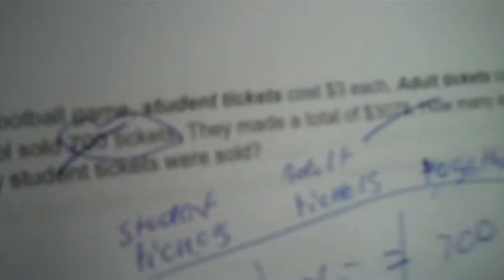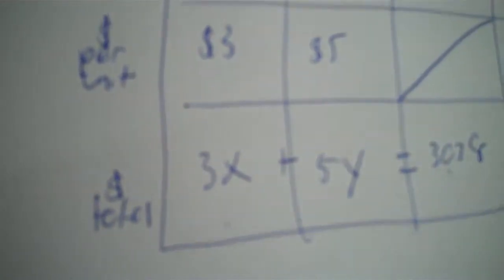So since we know the how many units together and the total together, this is worthless. There's another problem where it's not going to be what it is today. So, three dollars for the students and five dollars for the adults.